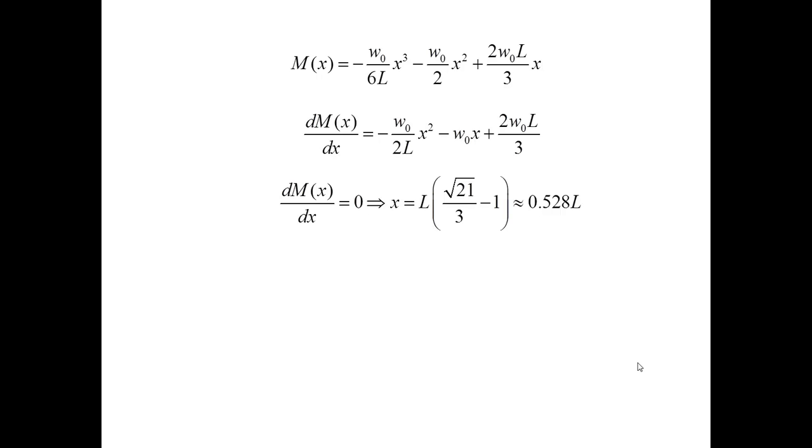Now, the value of X is substituted back into the equation M of X. And this gives me the expression that M max is equal to 0.188 W naught times L squared. Finally, to convince myself that this is indeed the maximum, I check the endpoints. And I see that at both zero and L, M is equal to zero. And therefore, this expression is indeed the expression for the maximum bending moment.